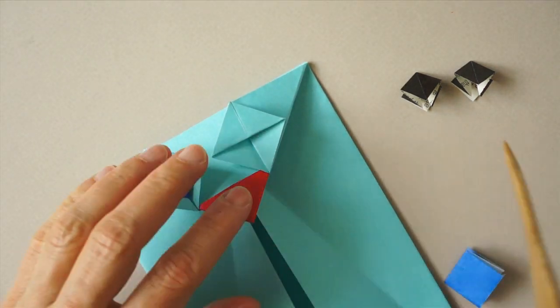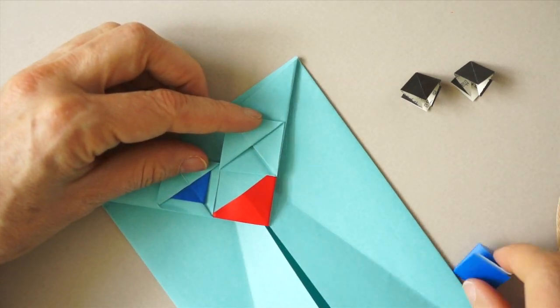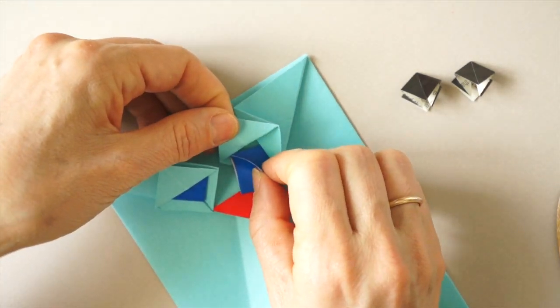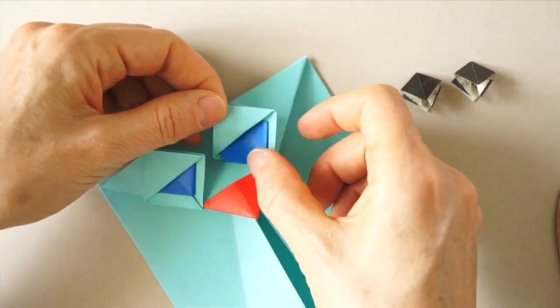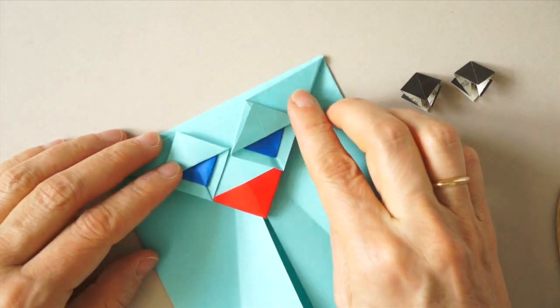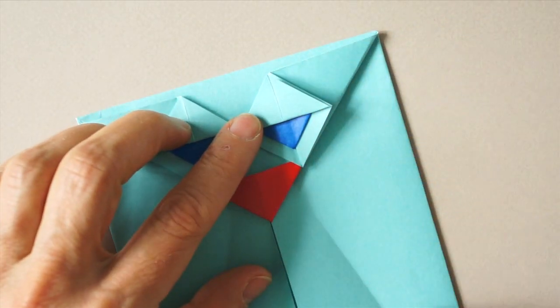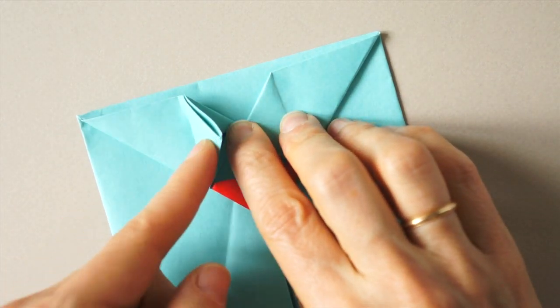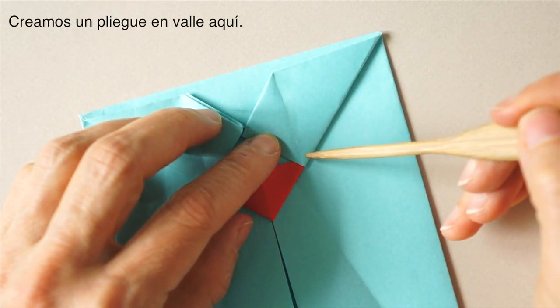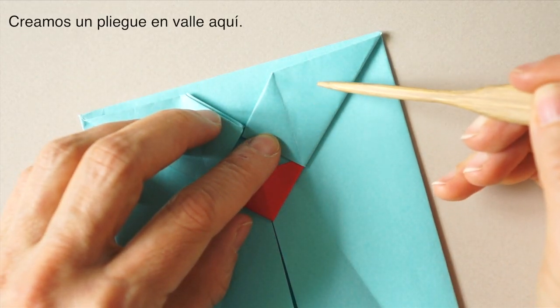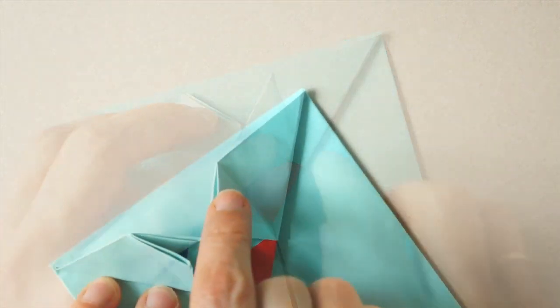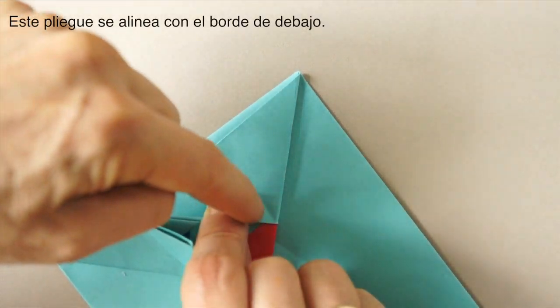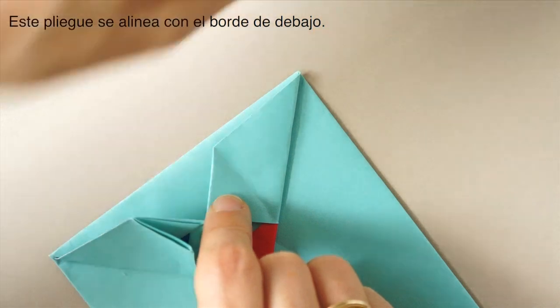The same here. Now we're going to bring this flap over and this flap over and we create a valley fold here. We can hold this flap and bring it over so that this fold falls exactly on that one.